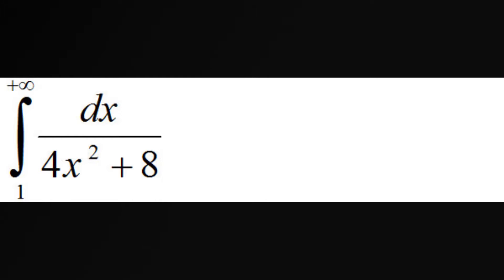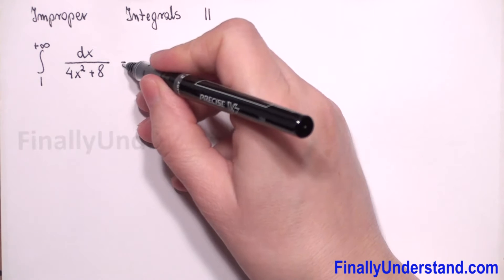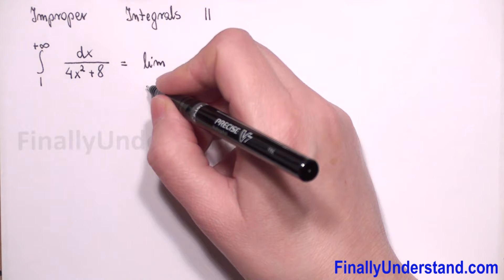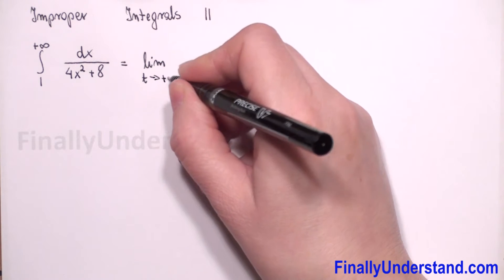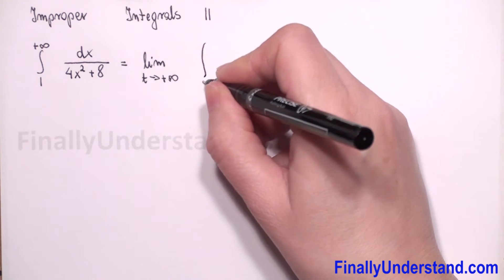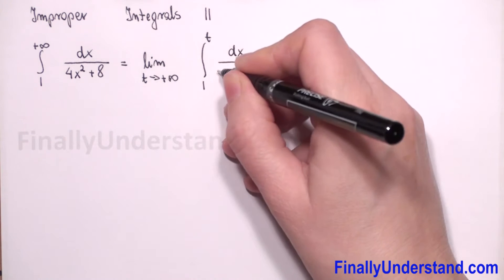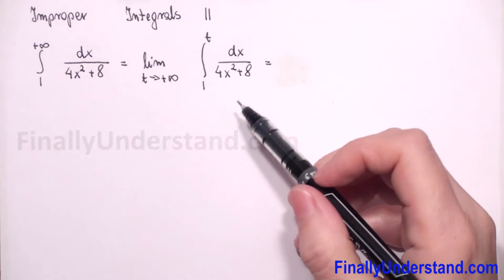We have infinity in the upper limit, so first we will convert the integral to a limit. This is equal to the limit as t goes to positive infinity of the definite integral from 1 to t of dx over 4x squared plus 8.